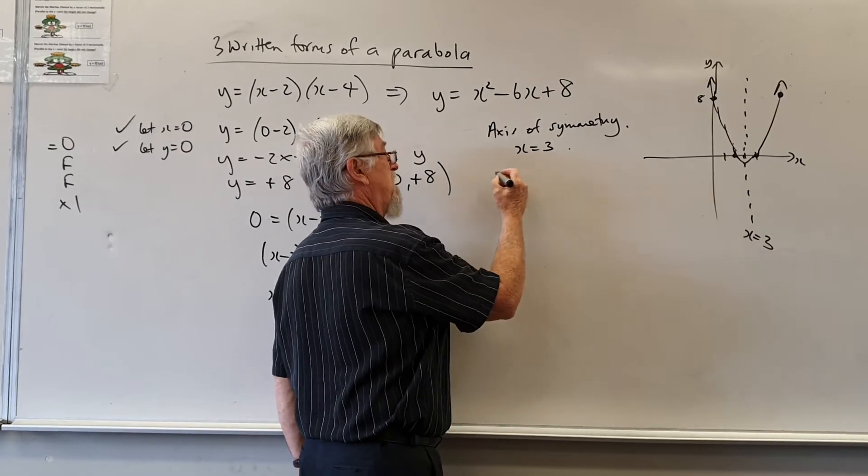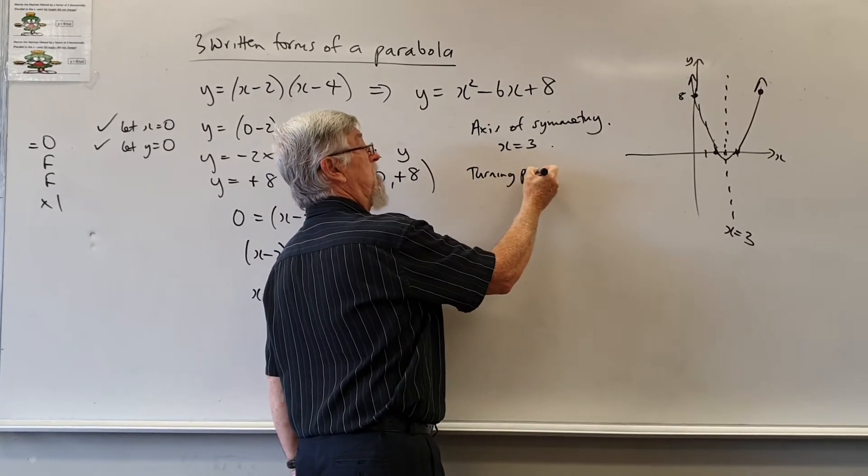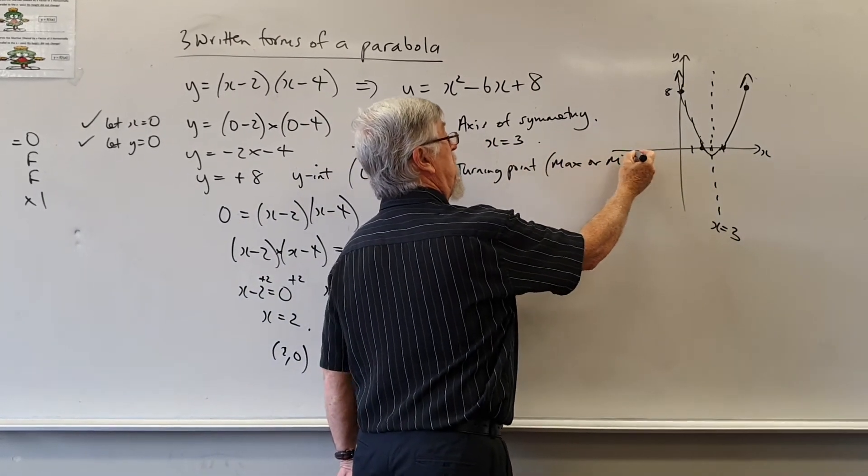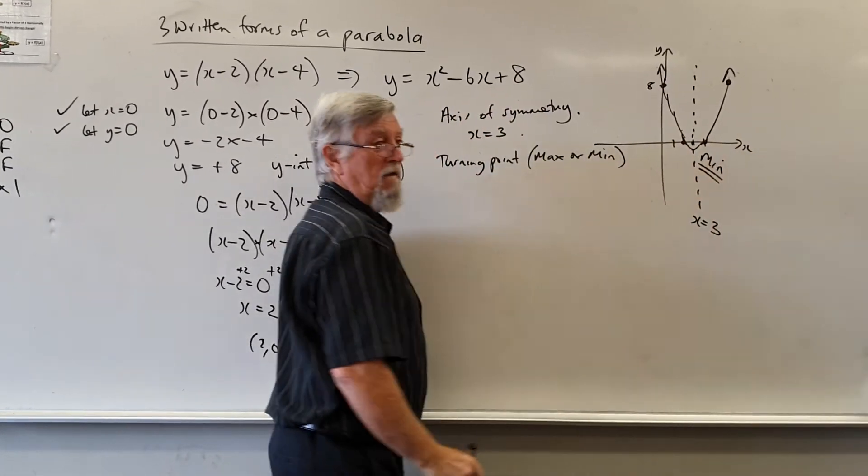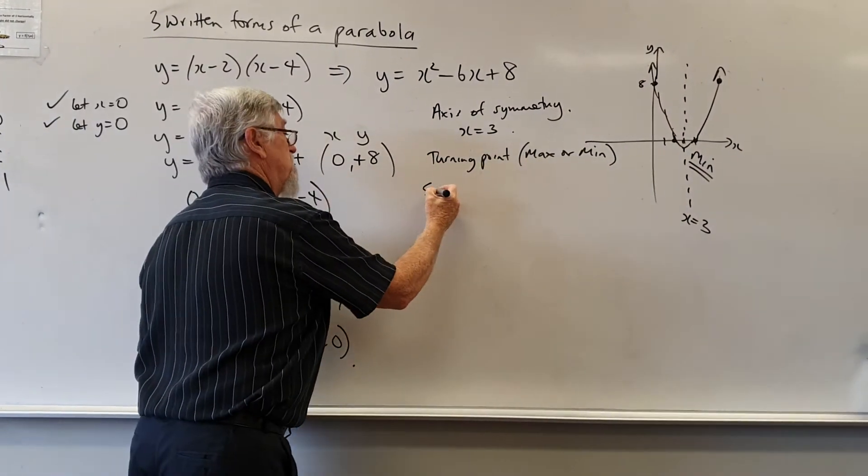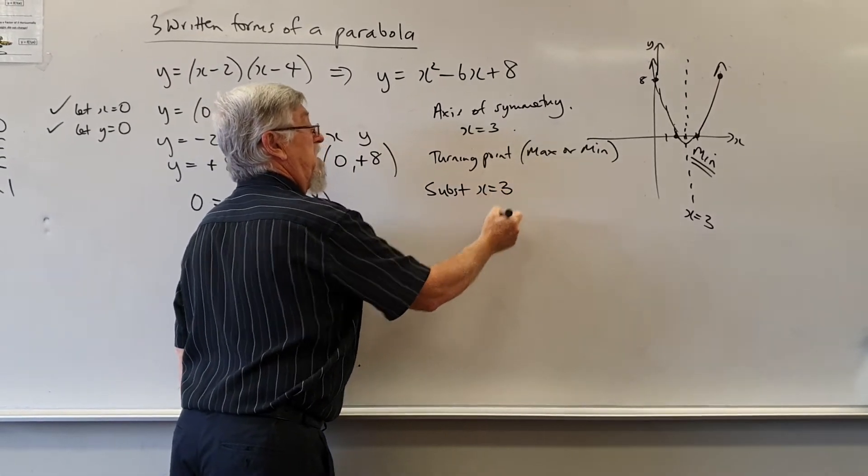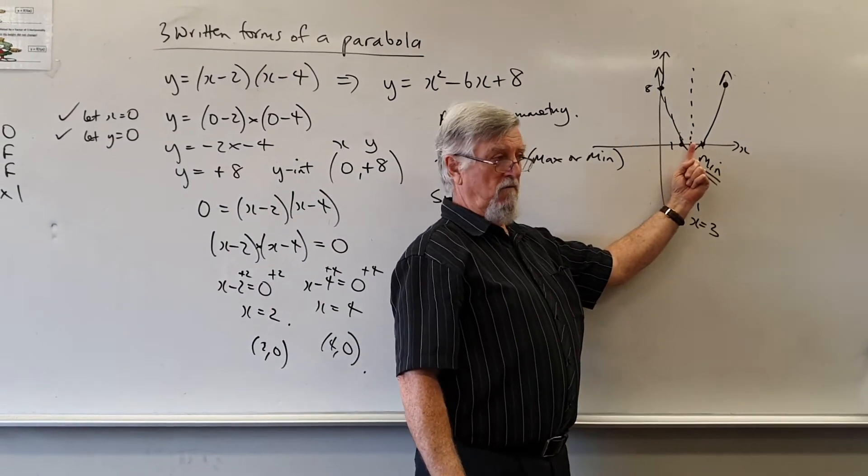Now here's one method of getting the turning point. And of course we mean it could be a max or it could be a min. In this case obviously it's a min. The old substitute. Substitute x equals 3. In other words, where is the middle? It's somewhere above or below 3.